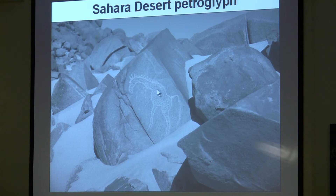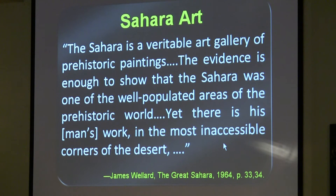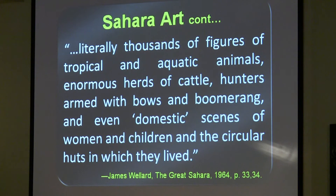In the Sahara, there are thousands of pictographs. A quote from a book on the Great Sahara says, 'The Sahara is a veritable art gallery of prehistoric paintings. The evidence is enough to show that the Sahara was one of the well-populated areas of the prehistoric world.' There are literally thousands of figures of tropical and aquatic animals, enormous herds of cattle, people armed with bows and boomerangs, and even domestic scenes of women and children. It was a well-watered area.